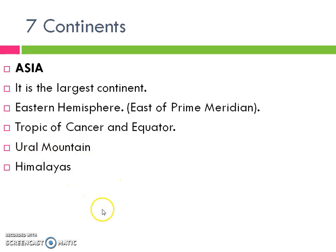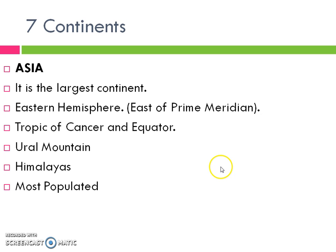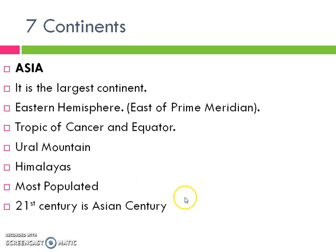Another prominent mountain range is the Himalayas, where Mount Everest and other high peaks are located. Asia is one of the most populated continents in the world, as it has the two most populated countries: China followed by India. You may have read in current affairs, particularly regarding Japan and India's bilateral summit, that the 21st century is the century of Asia — also known as the Asian century. The reason is that China is growing economically, India is growing, and other countries of Asia are also flourishing.